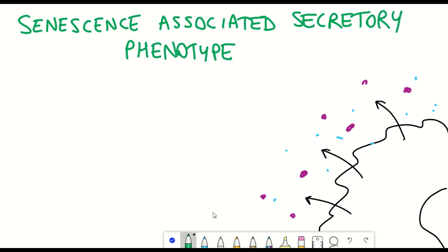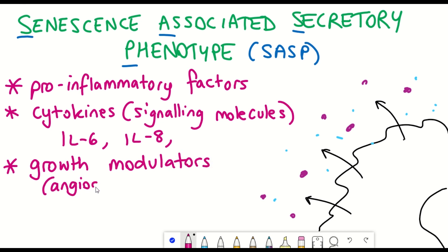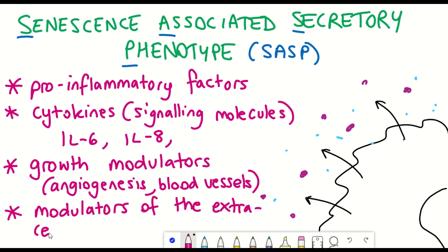The cell cycle arrest is a way of preventing damaged cells from replicating further and potentially causing tumor development. But what is the role of the senescence-associated secretory phenotype? Senescent cells, irrespective of the inducer of senescence, have been shown to secrete a variety of different factors that include pro-inflammatory factors, signaling molecules known as cytokines, growth modulators that can induce the formation of blood vessels, and also factors that can modulate the surrounding extracellular matrix of the cell.